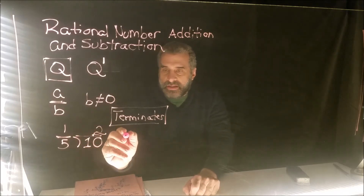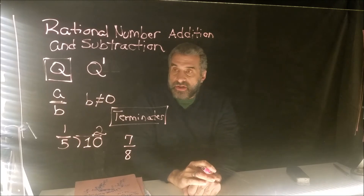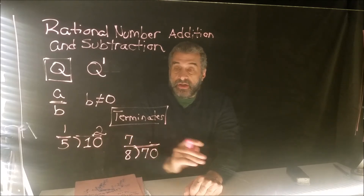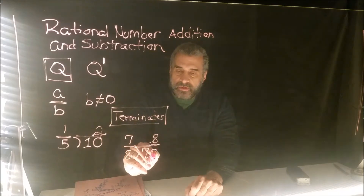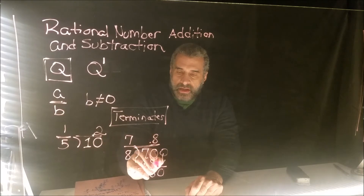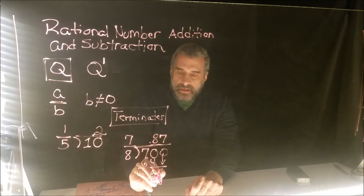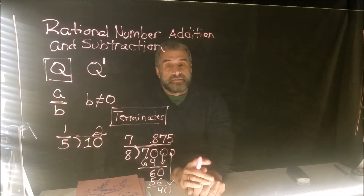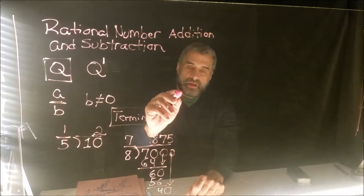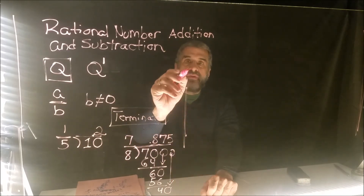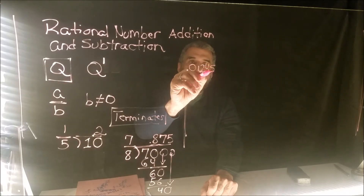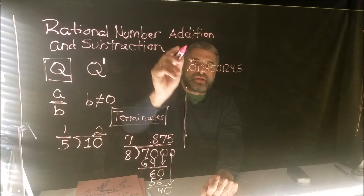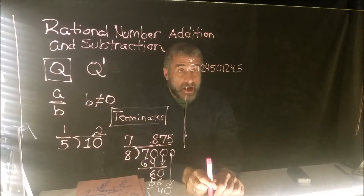Sometimes a decimal doesn't terminate but repeats — it has to repeat with a pattern. For seven-eighths: eight doesn't go into seven, but goes into seventy eight times (64), bring down to get 67, eight goes seven times, bring down to get 40, eight goes five times — it terminates at 0.875. A number like 0.01245 01245... repeating is also rational.